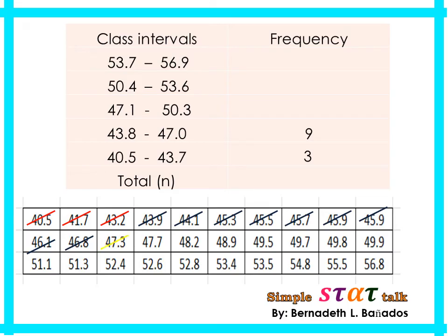For the third class interval, starting from 47.3: 1, 2, 3, 4, 5, 6, 7, 8 — stopping at 49.9. The value 51.1 cannot be included since it exceeds 50.3. So there are 8 values in the third class interval.